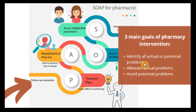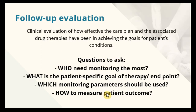The three main goals of pharmacy intervention are: to identify all actual or potential problems, to alleviate the actual problem, and to avoid any potential problems. These lead to the key questions to ask: who needs monitoring the most, what is the patient-specific goal of therapy or endpoint, which monitoring parameters should be used, and how to measure the patient's outcome.